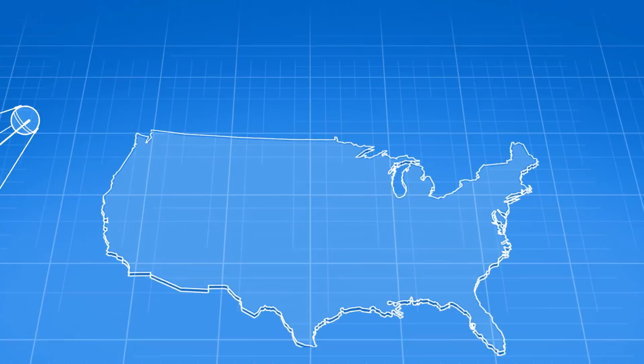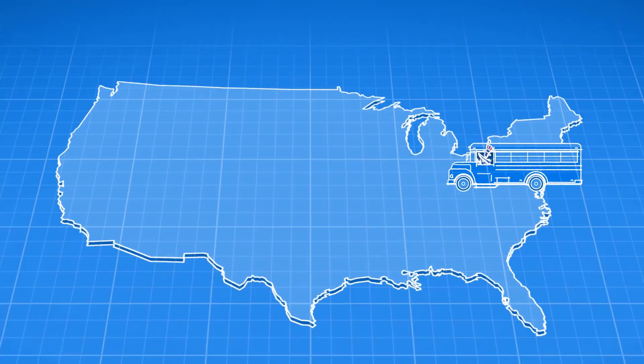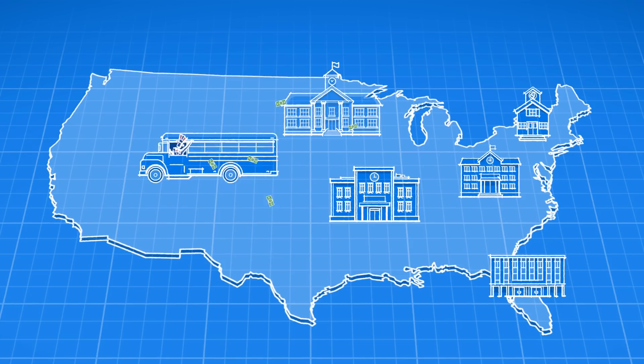Since the 1957 launch of Sputnik caught America's leaders by surprise, there have been constant efforts to improve America's education system. Yet despite a quadrupling of education spending in real terms since 1960, there is little evidence of improvement.